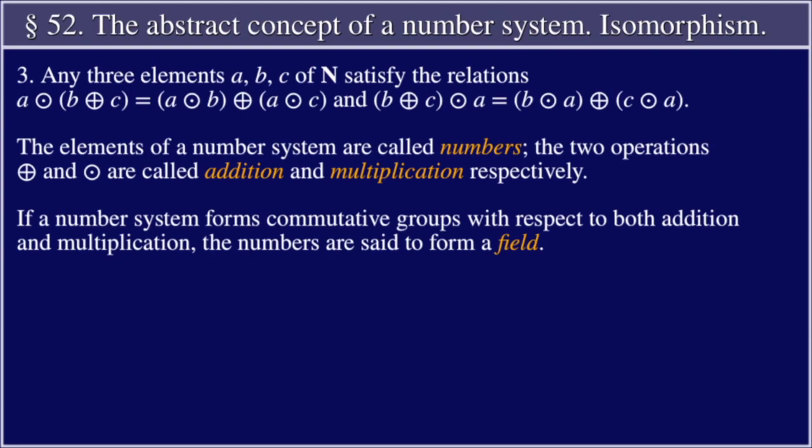The elements of a number system are called numbers. The two operations are called addition and multiplication respectively. If a number system forms commutative groups with respect to both addition and multiplication, the numbers are said to form a field.